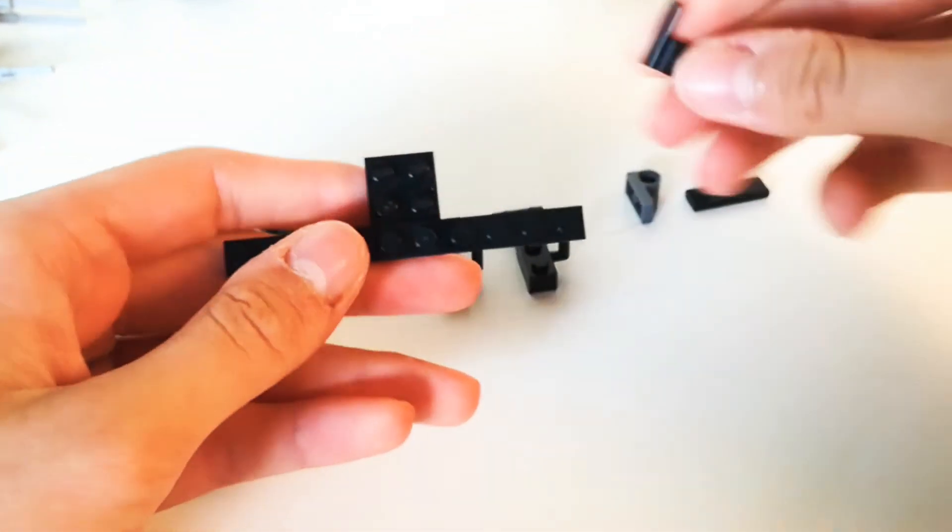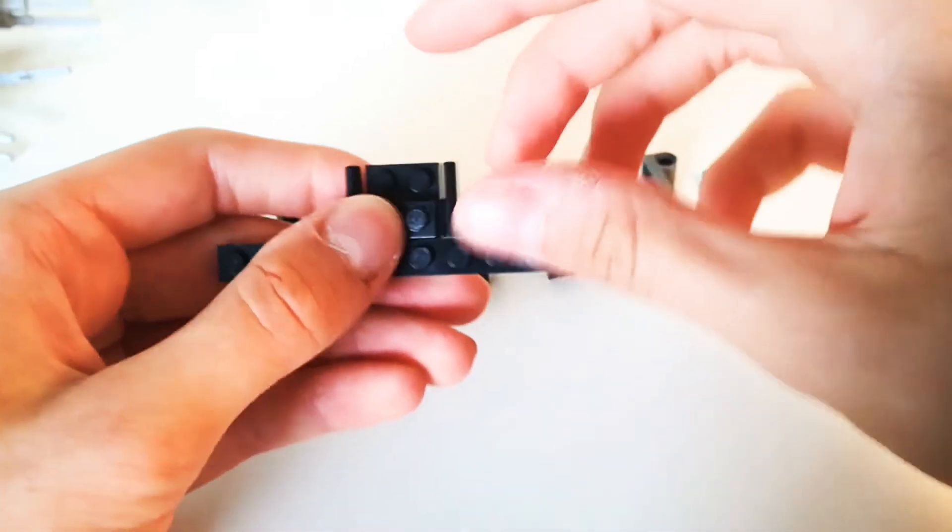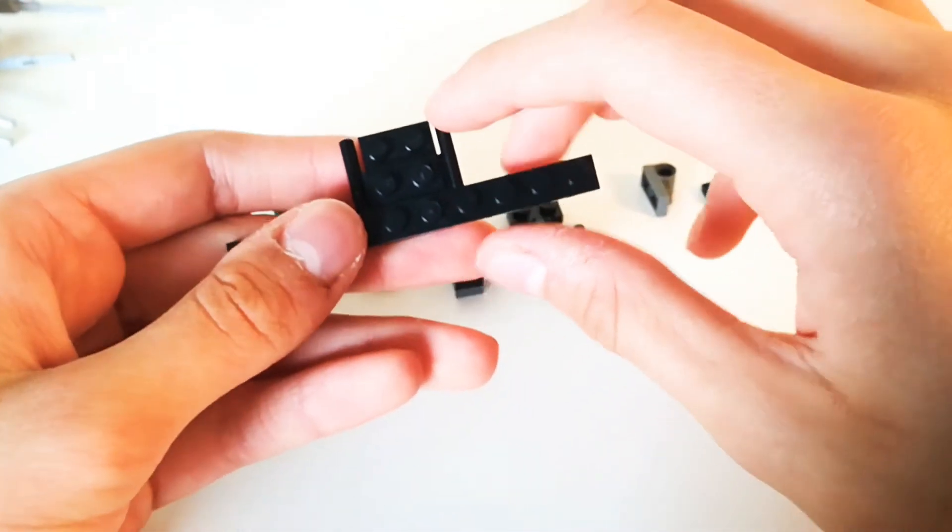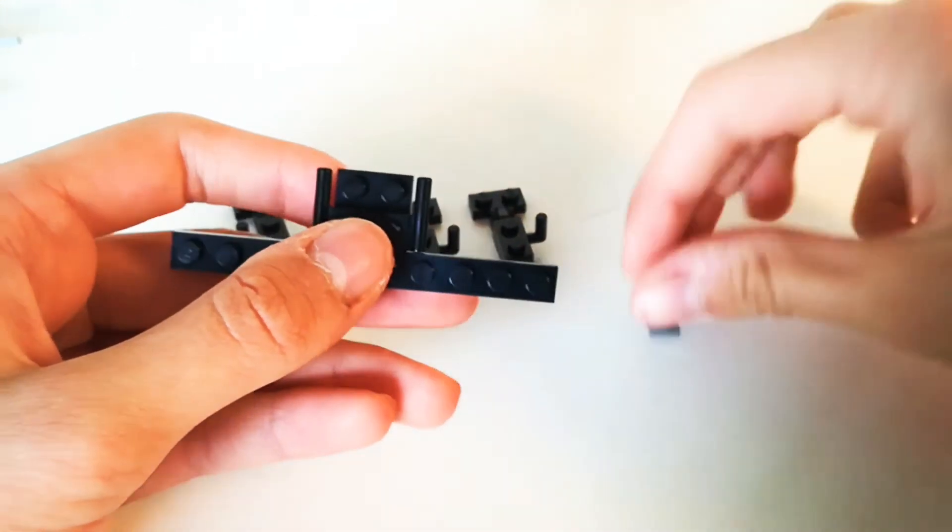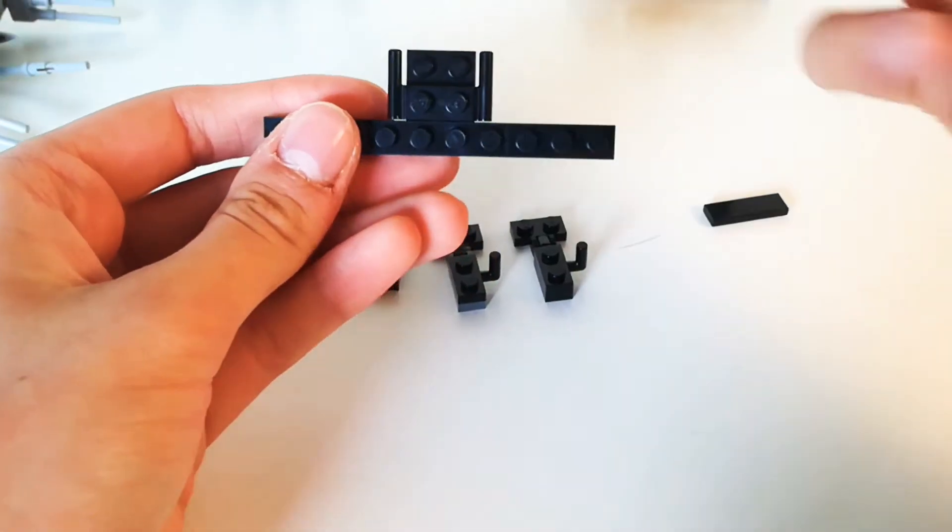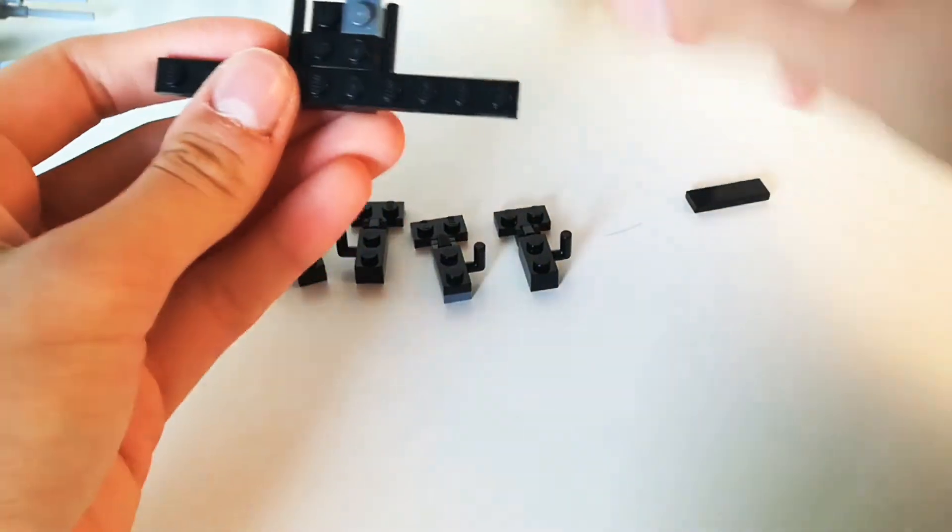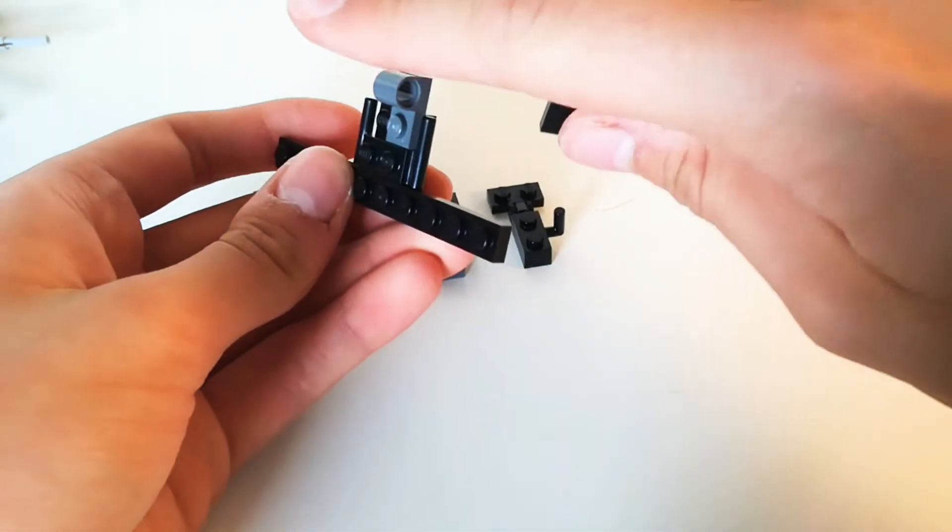You grab this 1x10 plate and put the 2x3 in the middle, and this modified plate with two bars on each side. This is actually really important - this stops it wobbling back and forth.